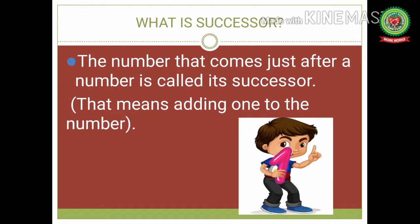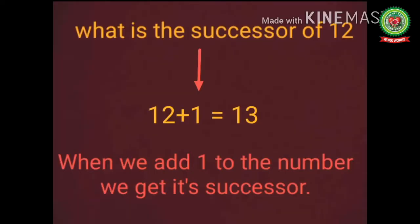Now, what do you mean by successor? The number that comes just after a number is called its successor. That means we add one to the number. For example, what is the successor of 12? We add 1 to 12, that is 12 plus 1, which equals 13. So when we add one to a number we get its successor.